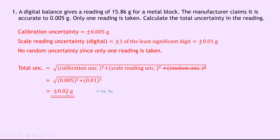Notice that I've stated this to one significant figure, which we should always be doing for uncertainties. And then if we wanted to write this in absolute form with our result plus or minus the uncertainty, we have that m equals 15.86 plus or minus 0.02 grams.